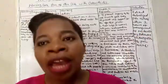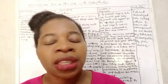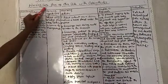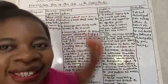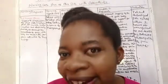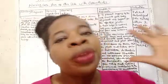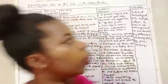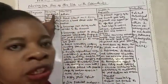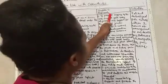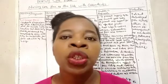To answer your nursing exam questions on nursing care plans, first write your heading like this: 'Nursing Care Plan of Mrs. Ode with Osteoarthritis.' That is your heading or title. Then draw your table with five columns: nursing diagnosis, nursing objectives, nursing actions, scientific rationale, and evaluation.